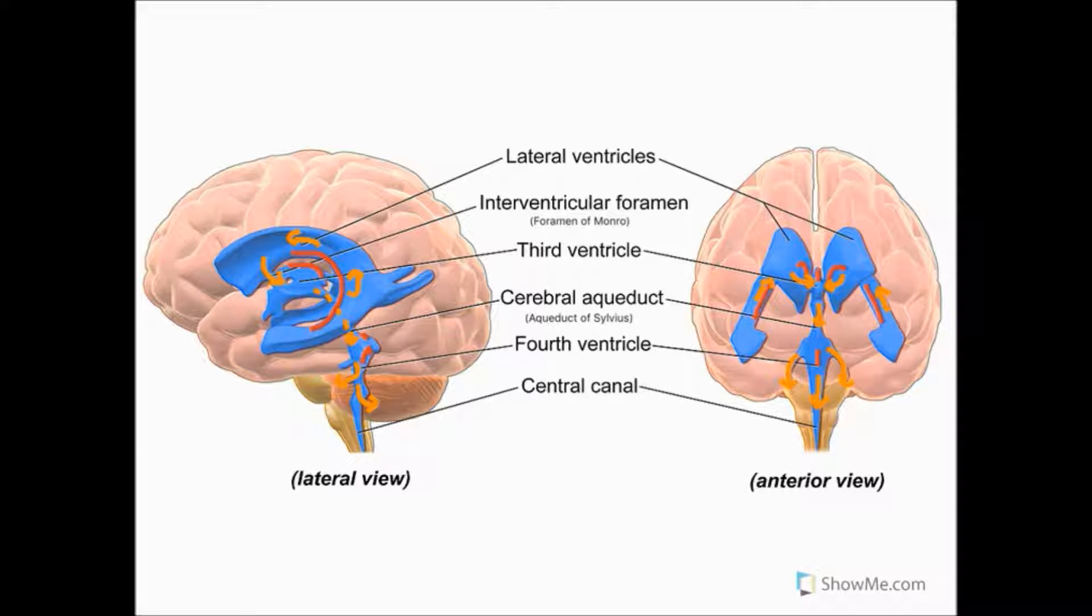An overview of the circulation of CSF through the ventricular system of the brain is demonstrated here by the yellow arrows. So firstly, if we start with the lateral ventricles found in both cerebral hemispheres.